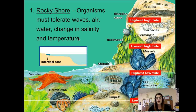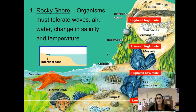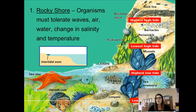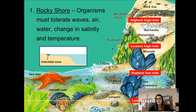The first habitat we're going to talk about in the intertidal zone is called the rocky shore. As you might realize, the rocky shore is very rocky, so there are lots of organisms that attach themselves to the rocks — such as barnacles, rockweed, different types of algae, and chitons. These organisms have to be ready to withstand a lot of different changes, and they need to be able to tolerate waves, since the water crashes up on these rocks when the tide comes in.